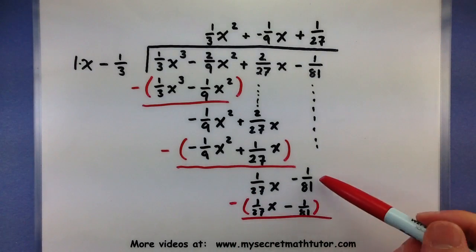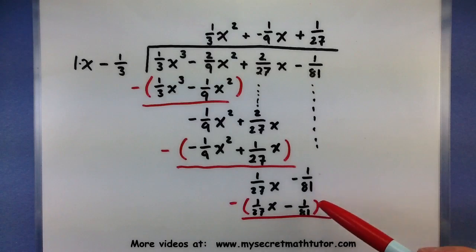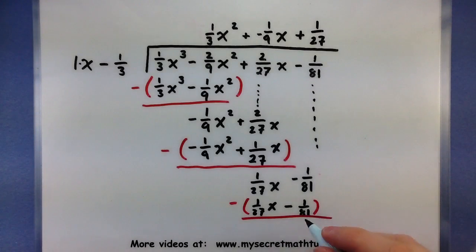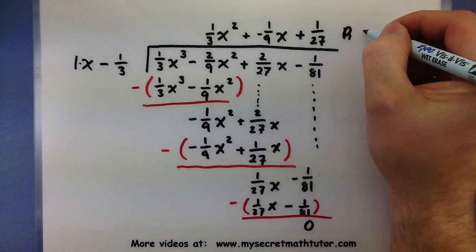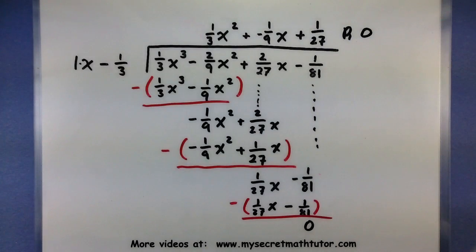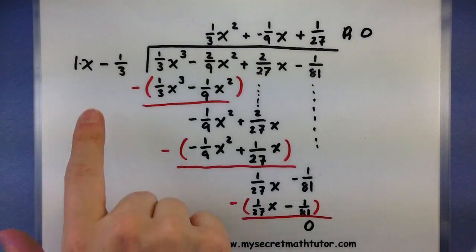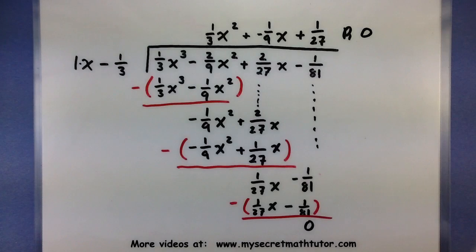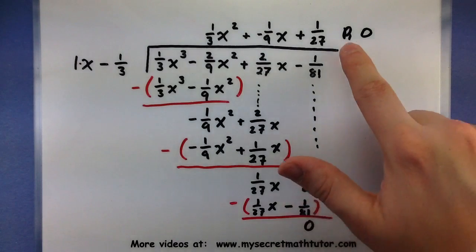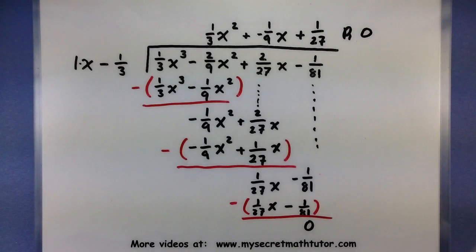Alright. It looks like these two are exactly the same, and since I'm subtracting the second one, we have 0 as our remainder. So, it looks like this polynomial divided our other polynomial evenly. Looks like our answer is 1/3 x² minus 1/9 x plus 1/27.